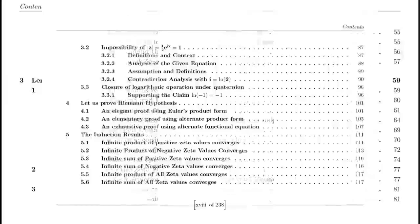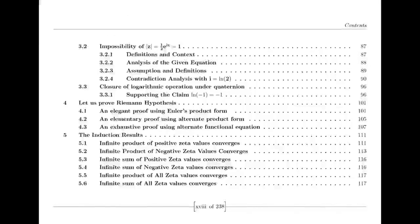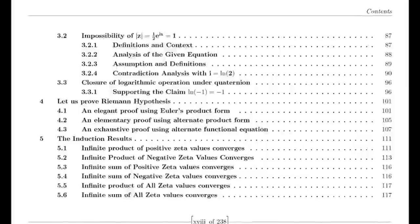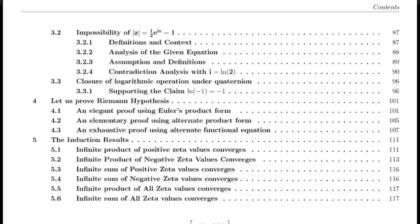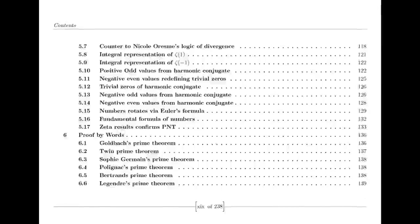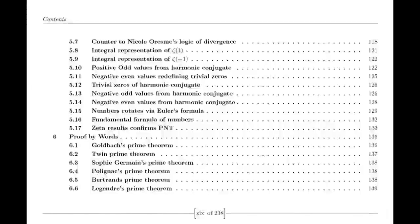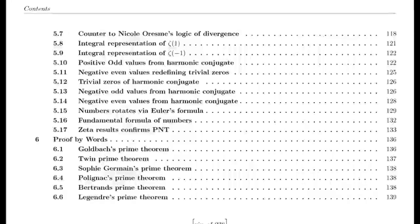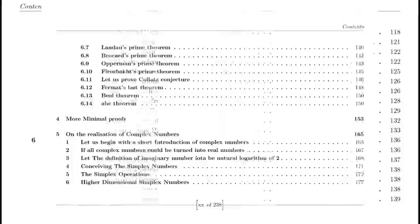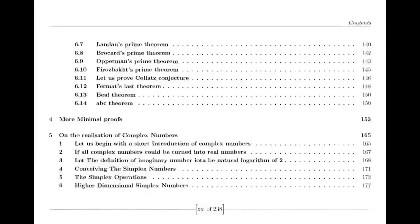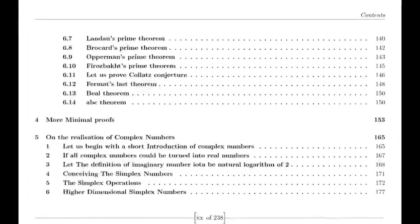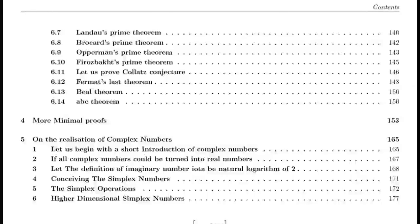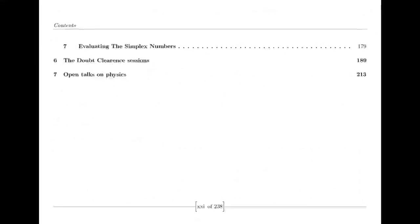Dirichlet Eta Function. Riemann was also influenced by the Dirichlet eta function, defined by an alternating series. This function is closely related to the zeta function and provides valuable insights into its behavior, particularly for values of s less than 1. The relationship between the eta function and the zeta function is encapsulated in a simple formula involving the gamma function and powers of 2, which helps in understanding the zeta function's properties across different regions.